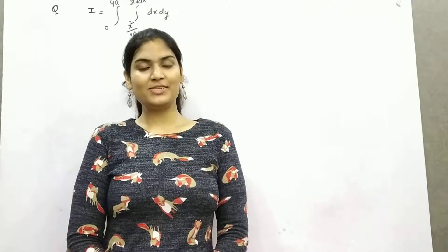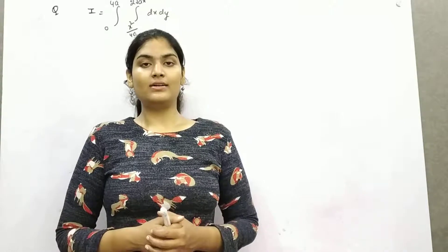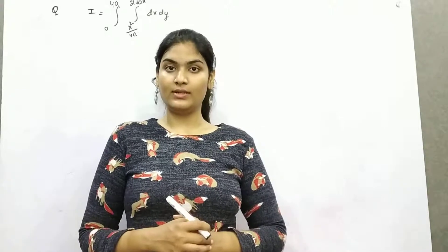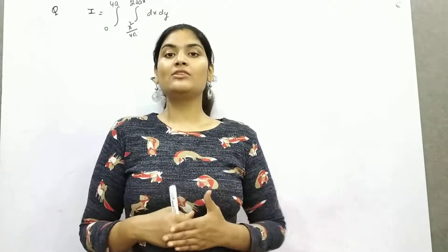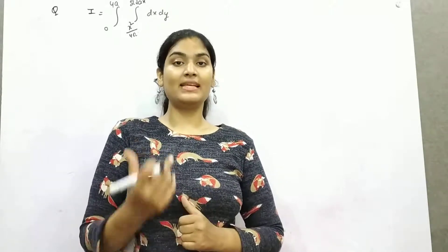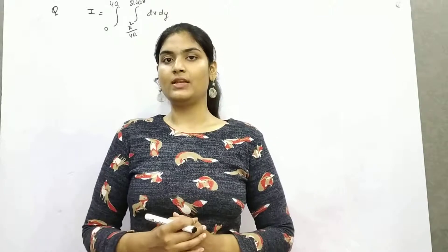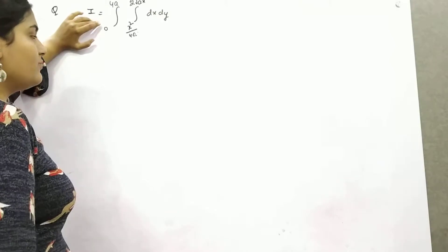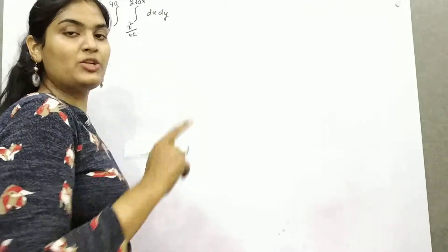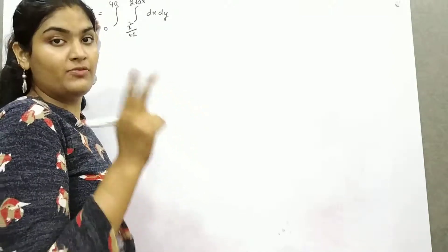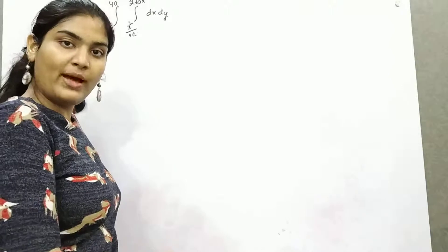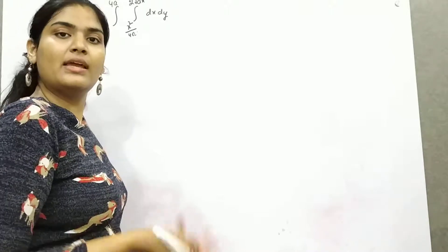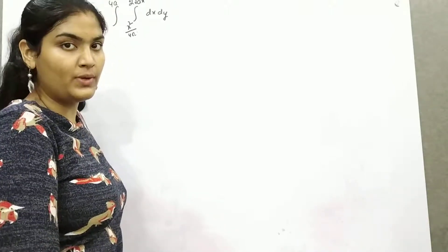Hello and welcome to Ganesh Institute channel. In this video we will discuss an example based on the change of order of integration. The steps are: first find which limit is for which variable, figure out what equation it represents — parabola, circle, etc. — then write down the new limits and integrate according to the double integral rule.